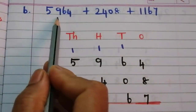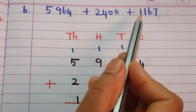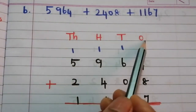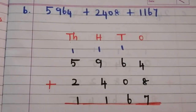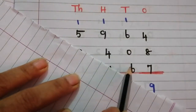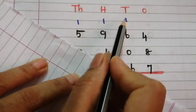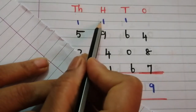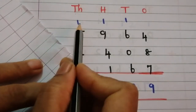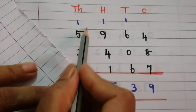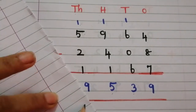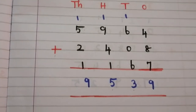Problem B: 5,964 plus 2,048 plus 1,167. Write all three numbers vertically with ones, hundreds, thousands, and plus sign. Ones: 8 plus 7 is 15, 15 plus 4 is 19 — put 9, carry 1. Tens: 6 plus 6 is 12, 12 plus 1 is 13 — put 3, carry 1. Hundreds: 9 plus 1 is 10, 10 plus 4 is 14, 14 plus 1 is 15 — put 5, carry 1. Thousands: 5 plus 2 is 7, 7 plus 1 is 8, 8 plus 1 is 9. The answer is 9,539.